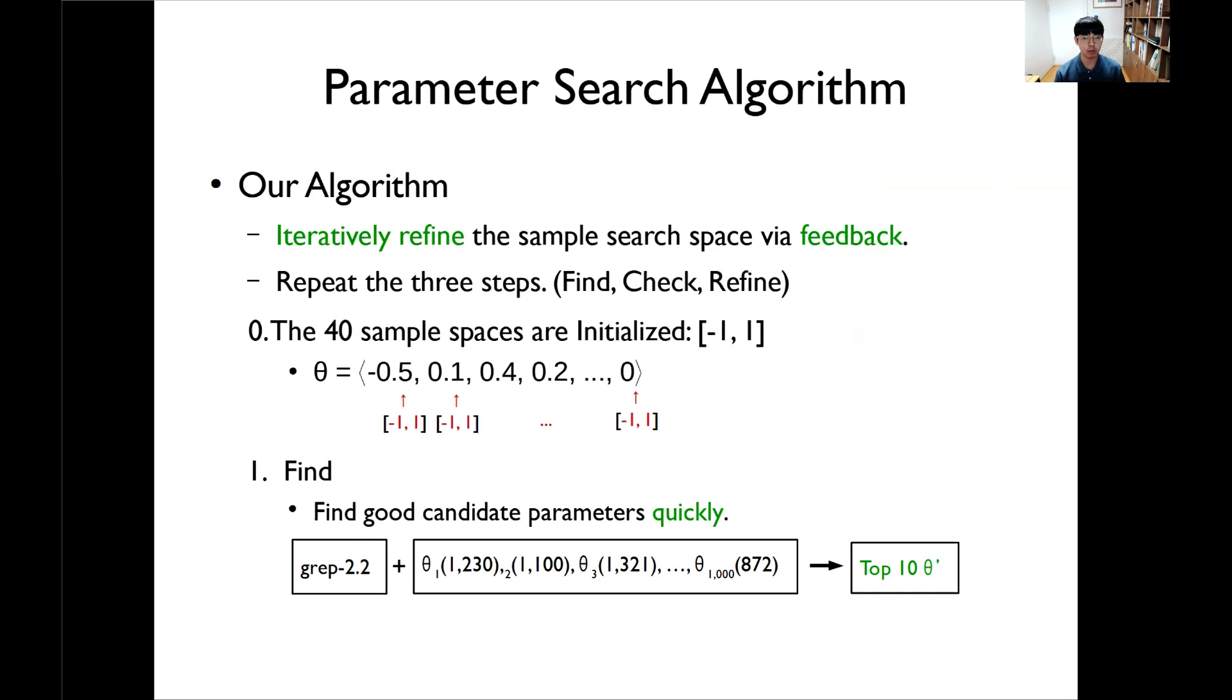The key idea of our algorithm is to iteratively refine the sample search space via feedback. Our algorithm repeats three steps: find, check, and refine. Before starting our algorithm, the 40 sample spaces are initialized as a real number between minus 1 and plus 1. Then in the first stage, we randomly sample thousands of parameter values in the initialized sample space and evaluate the performance of each parameter such as branch coverage. And according to their branch coverage, we choose top 10 parameters. The intuition of the first stage is finding good candidate parameters quickly.